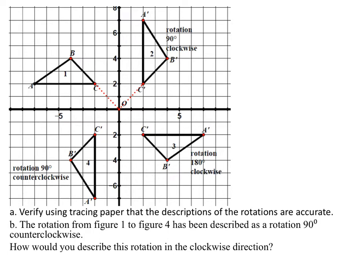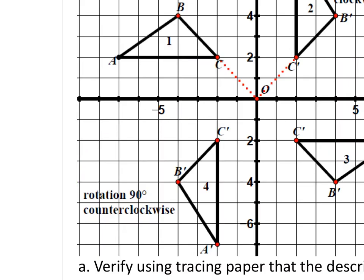The rotation from figure one to figure four has been described as a 90-degree counterclockwise rotation. Let's confirm that it's 90 degrees. To do this, I'm going to use point A and compare it to A prime. I need to find the slope of the line that connects A to the center of rotation using the stair-step method.